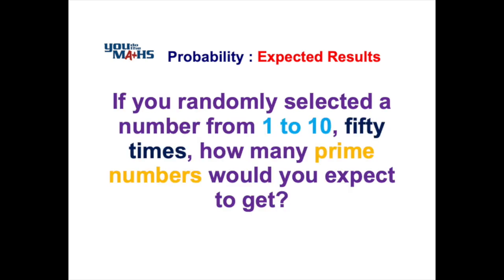Let's consider this example now where we've got numbers from one to ten, and we're going to select a number fifty times. The question is, how many prime numbers would we expect to get out of those fifty selections?